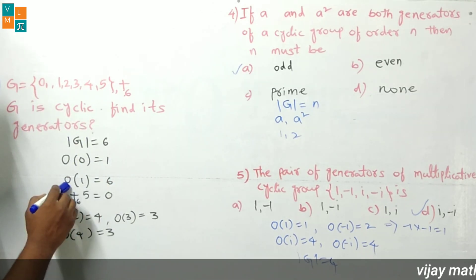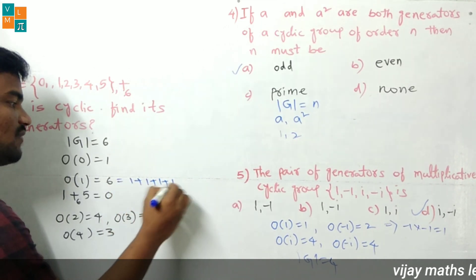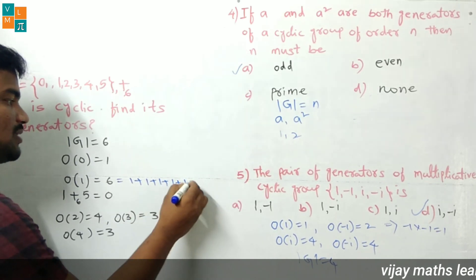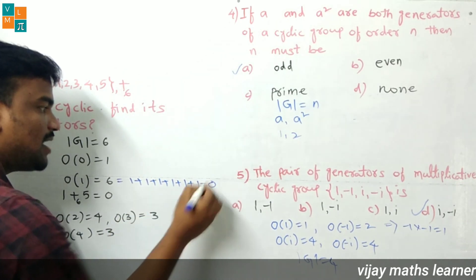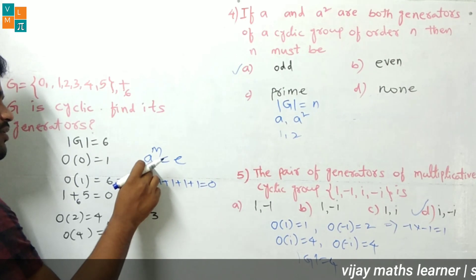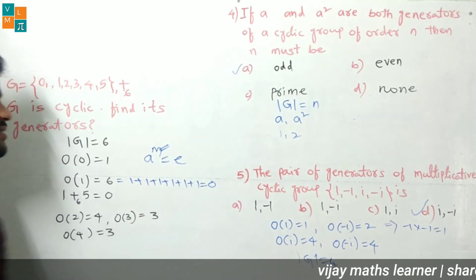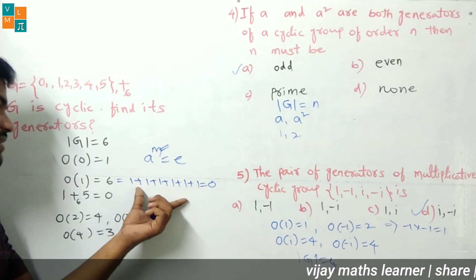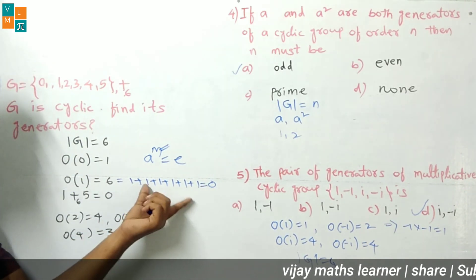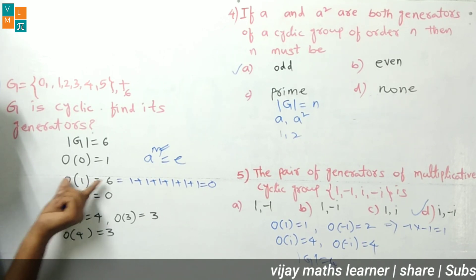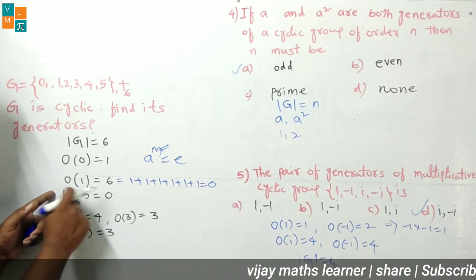Order of 0 is 1. Order of 1 is 6, because adding 1 six times: 1+1+1+1+1+1 = 6, and 6 mod 6 = 0, which is the identity. So after 6 additions we reach the identity, meaning the order of 1 is 6. The inverse element of 1 in this group is 5 (since 1+5 = 6 ≡ 0 mod 6).